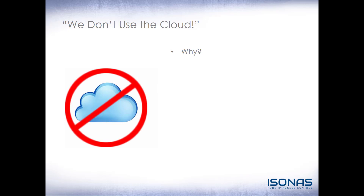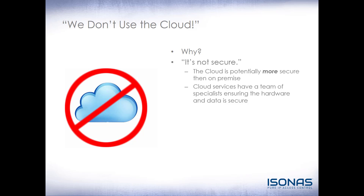Some customers will say they don't use the cloud. The first question I always ask is, why don't you want to use the cloud? They may say it's not secure. Actually, the cloud is potentially more secure than on-premise. Cloud services have a team of specialists ensuring the hardware and data is secure. The CIA uses Amazon Web Services and they have a lot of highly classified data stored in the cloud. The data is all encrypted — the data in the reader controller or IP bridge is encrypted, and you can encrypt the communications between the device and the server itself.